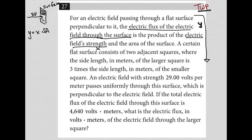The next sentence says a certain flat surface consists of two adjacent squares, where the side length in meters of the larger square is three times the side length in meters of the smaller square. I can draw that. So I have small square, I have larger square. The side lengths of the larger square are three times the side lengths of the smaller square. So that's labeled.